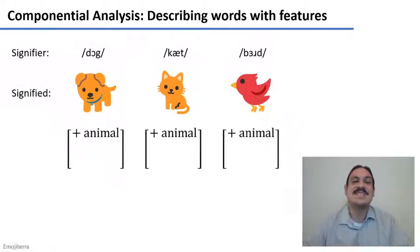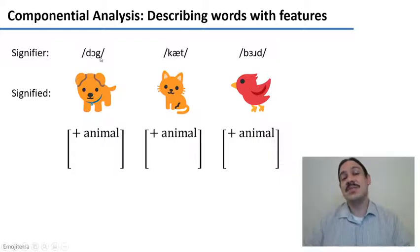Let's have some fun with features. Let's say we have three words, which I have decomposed here into their signifiers and their signified. There's the word dog, which has the signifier dog, this chain of phonemes. And the signified is the mental ideas that you have when you see this animal, which we're going to describe with one feature plus animal.